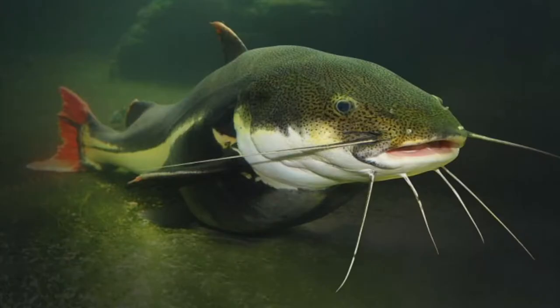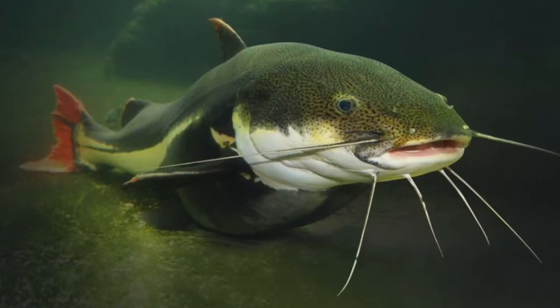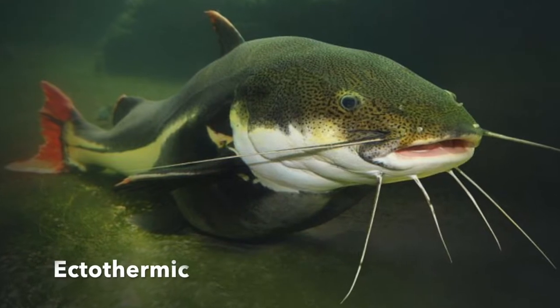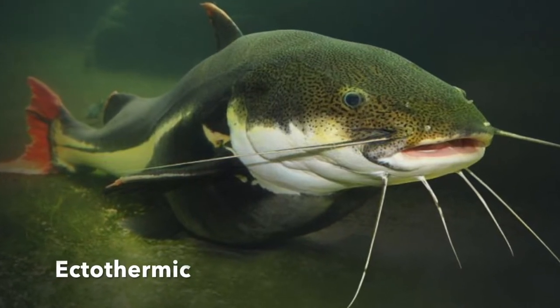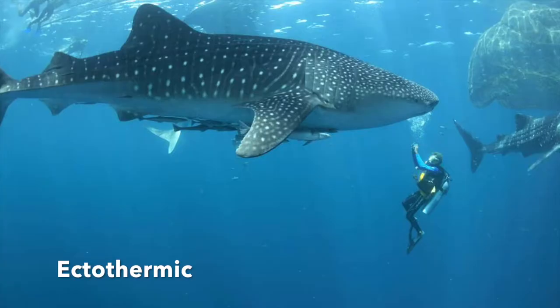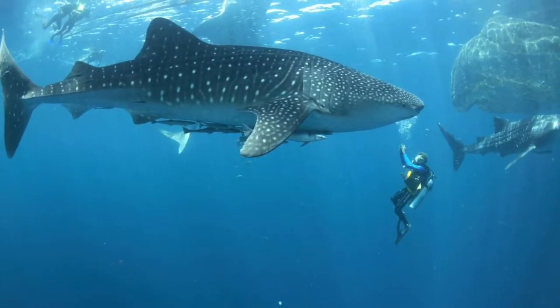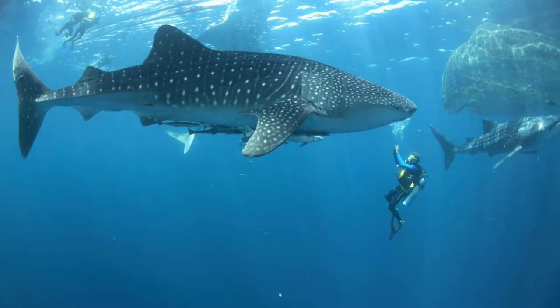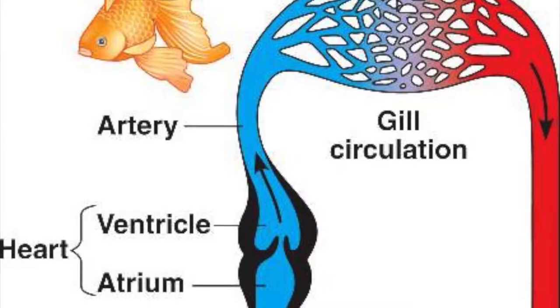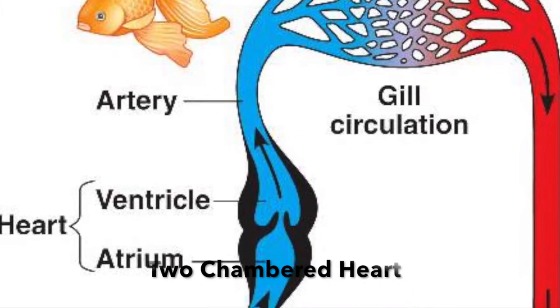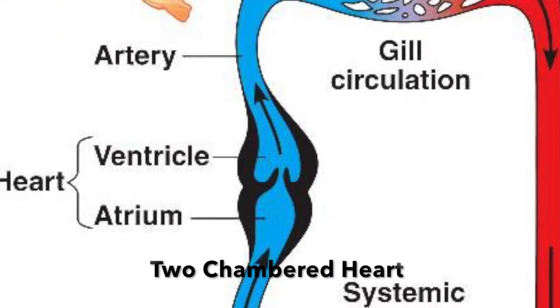Although they only contain these differences, they have quite a few similarities. To start off, they are ectothermic, meaning that they rely on their environment for body temperature. Their two-chambered heart is also a common characteristic.